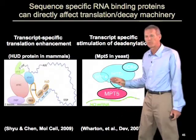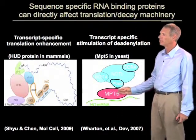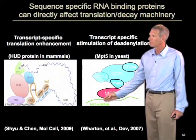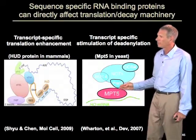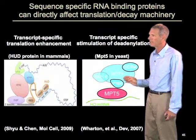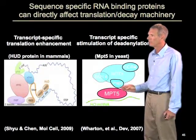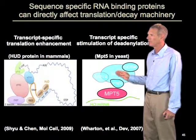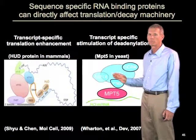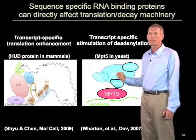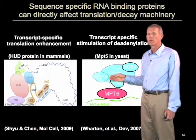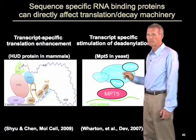We see the exact same process with RNA degradation. Here's an RNA binding protein, MBT5, which binds to certain mRNAs in yeast cells, and then has direct interactions with components of the CCR4 deadenylase complex. The presence of this protein recruits the complex to the message and leads to much faster rates of deadenylation. So there are direct interactions between RNA binding proteins and either the translation machinery or the mRNA degradation machinery.